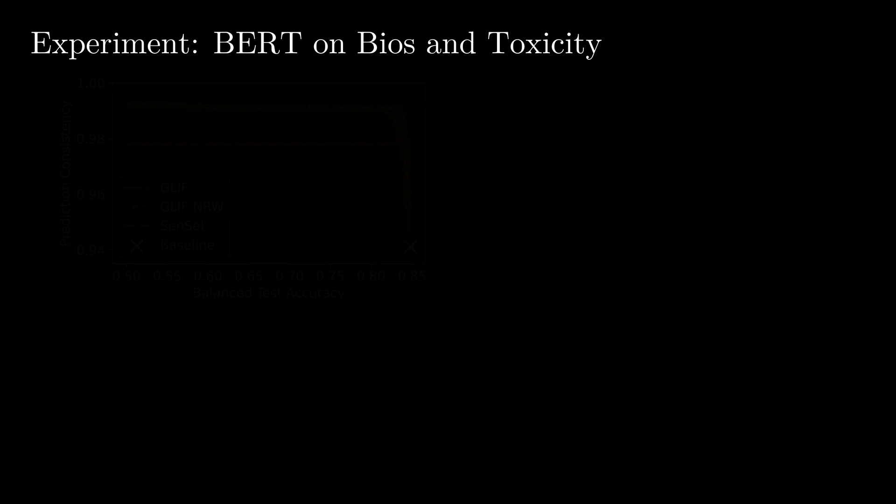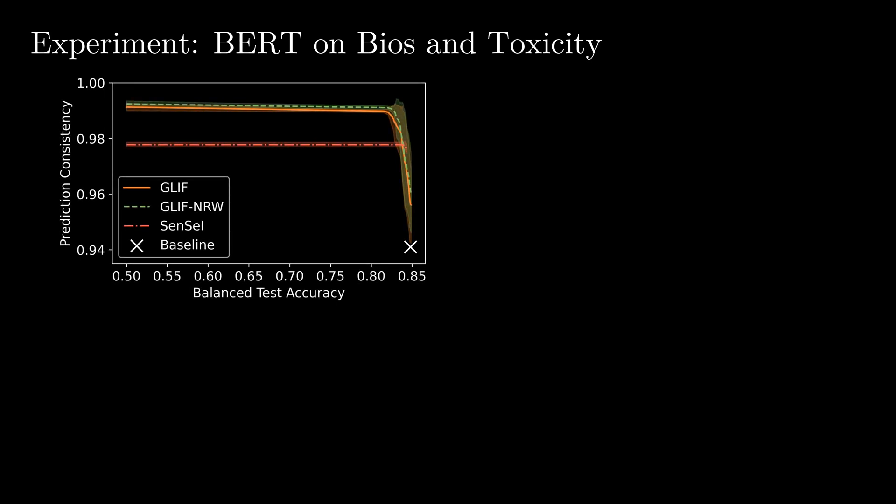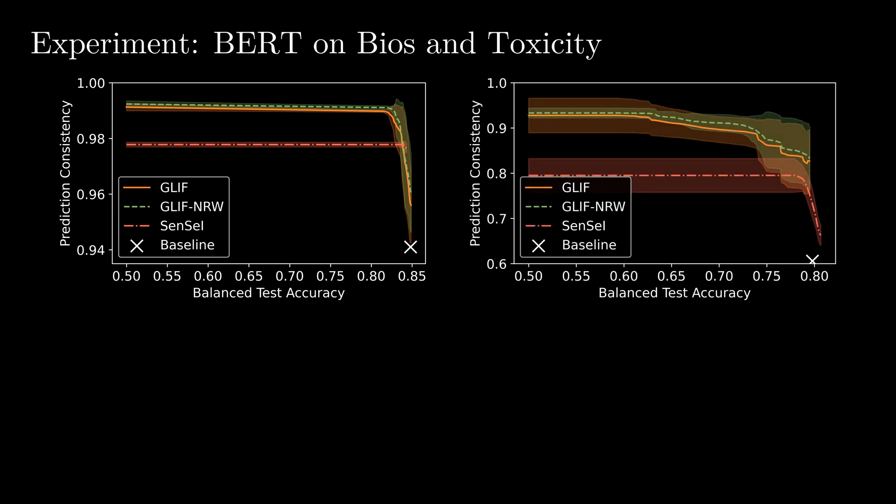For both tasks, we measure the balance test accuracy as well as fairness via the prediction consistency. This can be seen for BIOS on the left as well as for toxicity on the right. For the prediction consistency, we create counterfactuals, for which we swap the gender in the biographies, and for toxicity, we replace the identities such as male, female, Christian, gay, LGBTQ, among 45 others. A prediction is considered consistent if it is the same for the other gender, or the same for all 50 identities. A larger prediction consistency means that the model is more fair as it does not discriminate based on the respective protected attributes.